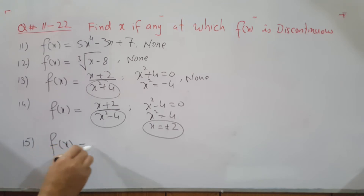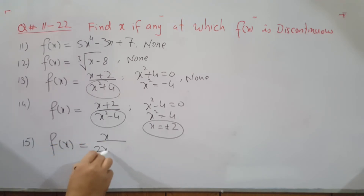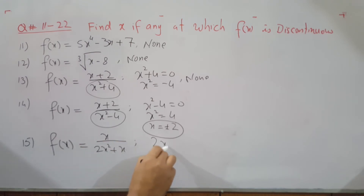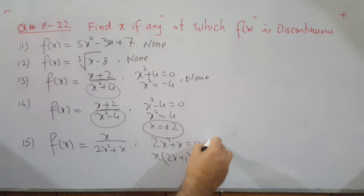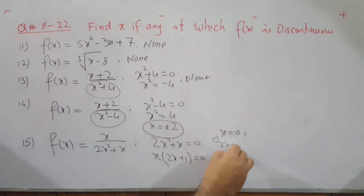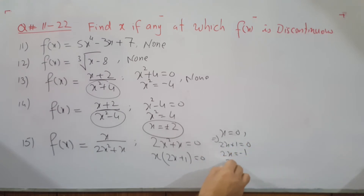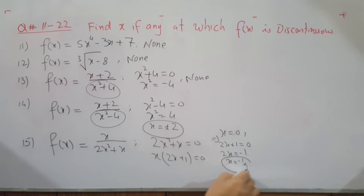Question 15: f of x equals x divided by (2x²+x). Set the denominator 2x²+x equal to zero. Factor out x: x(2x+1) equals zero. This gives x equals 0 and 2x+1 equals 0, meaning x equals −1/2. So you have two discontinuous points: x equals 0 and x equals −1/2.